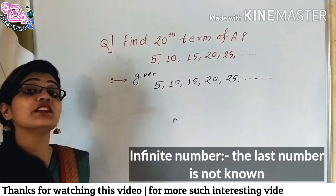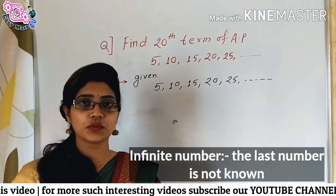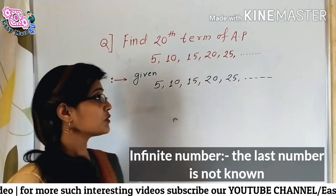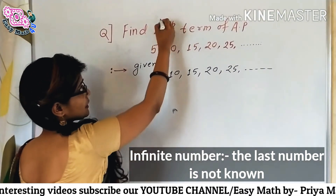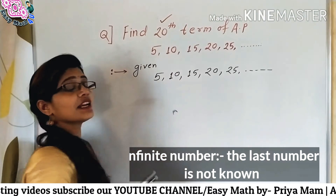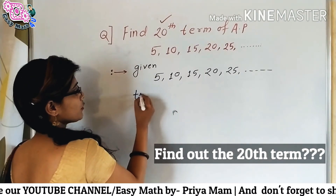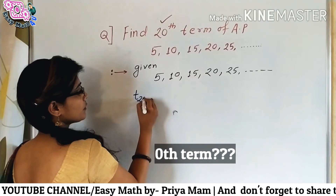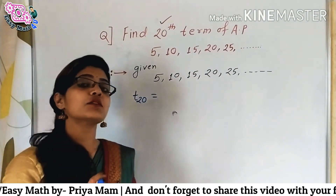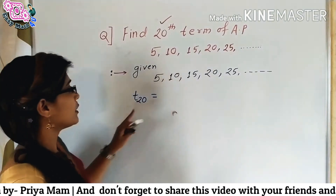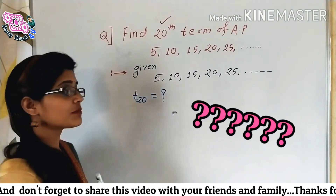So, it is an infinite sequence because the last term you don't know. So, आपको first of all write down करना है — क्या find करना है? You have to find out the 20th term. So, you have to find out T of 20 — इस sequence की 20th term क्या होगी. So, T of 20 आपको find करना है, question mark.